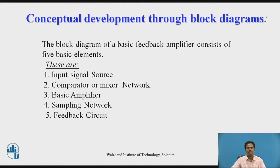Now let us go for conceptual development through block diagrams. The block diagram of a basic feedback amplifier consists of five basic elements: input signal source, a comparator or mixer network at the input side, a basic amplifier, a sampling network, and finally the feedback circuit.